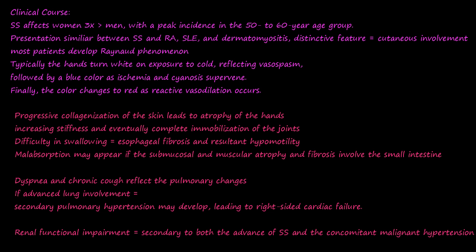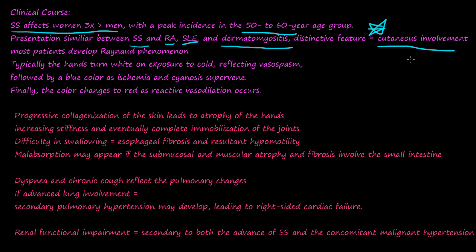Systemic sclerosis affects three times as many women as men, with a peak incidence in 50 to 60-year-olds. The presentation is similar to rheumatoid arthritis, systemic lupus erythematosus, and dermatomyositis, but the distinctive feature is cutaneous involvement. Most patients develop Raynaud's phenomenon, where hands turn white on exposure to cold, followed by a blue color due to ischemia and cyanosis.